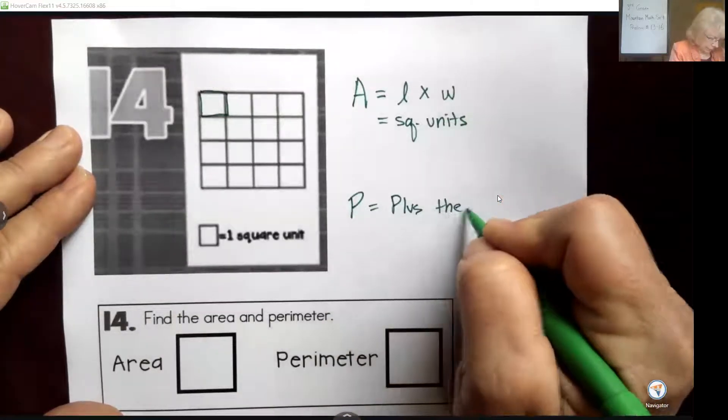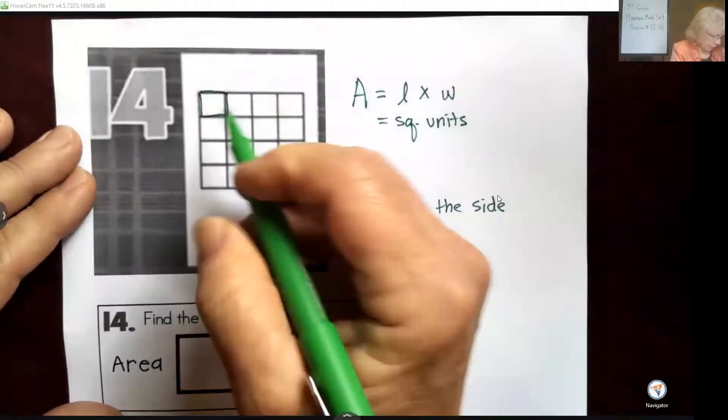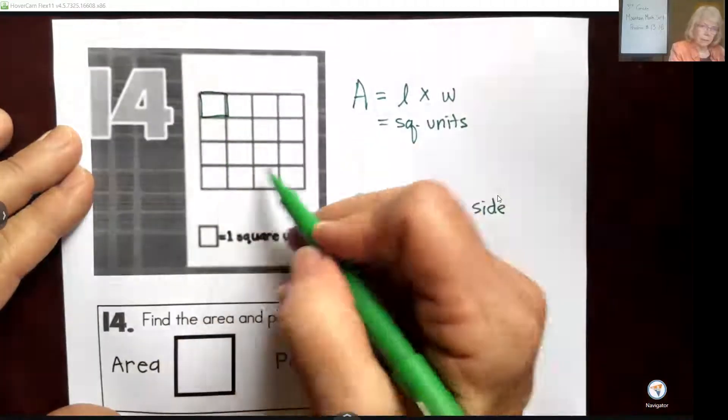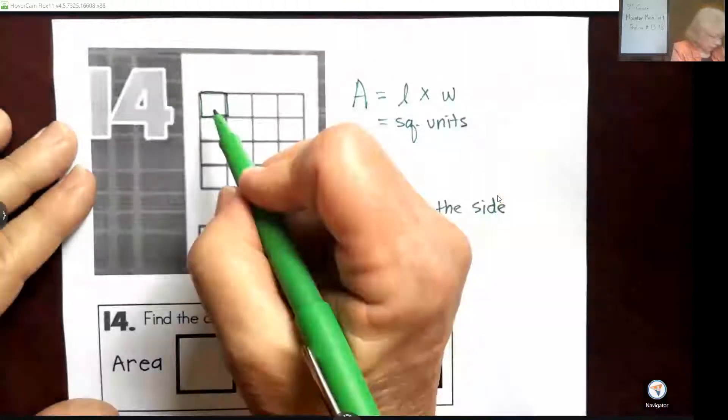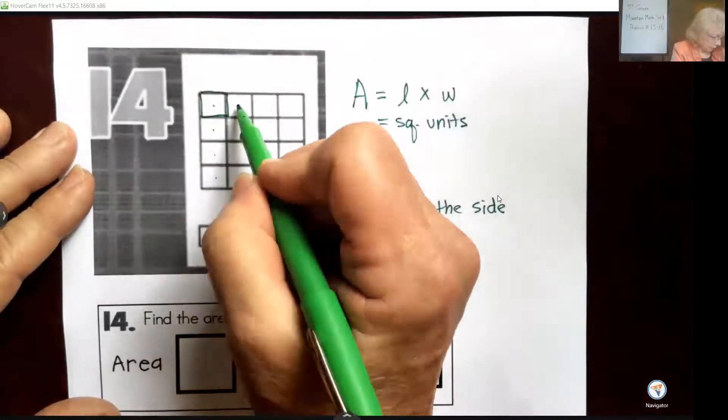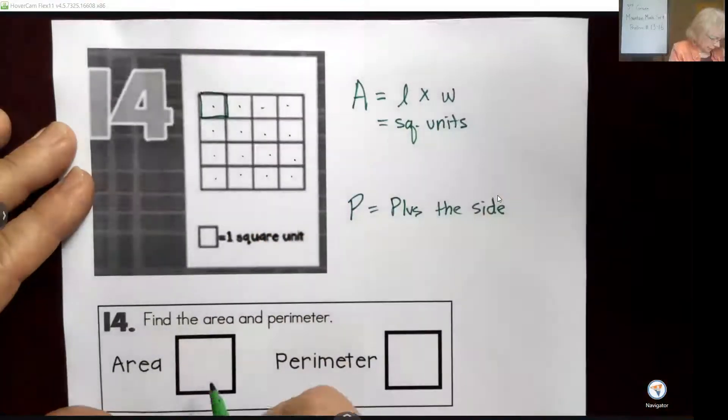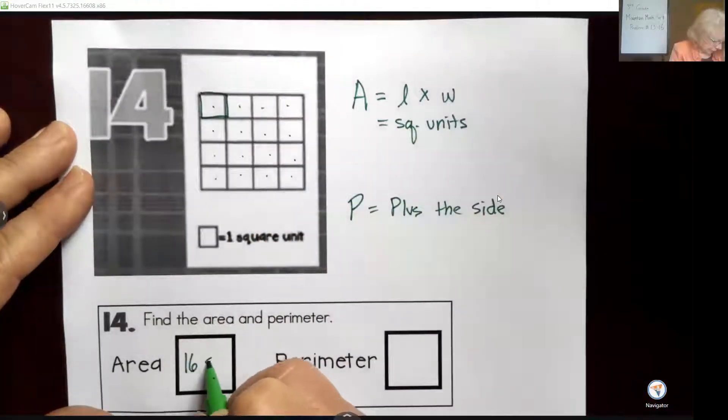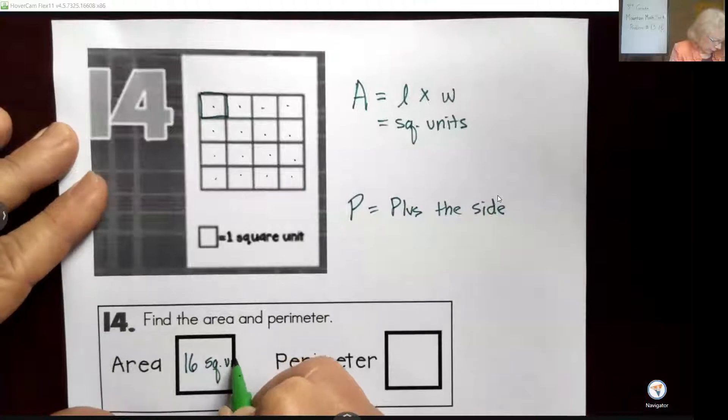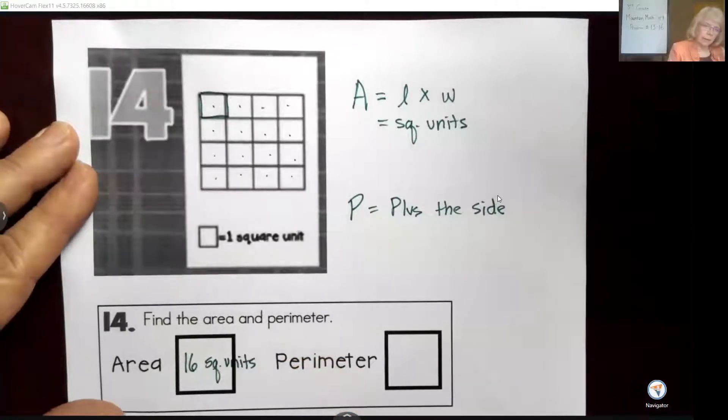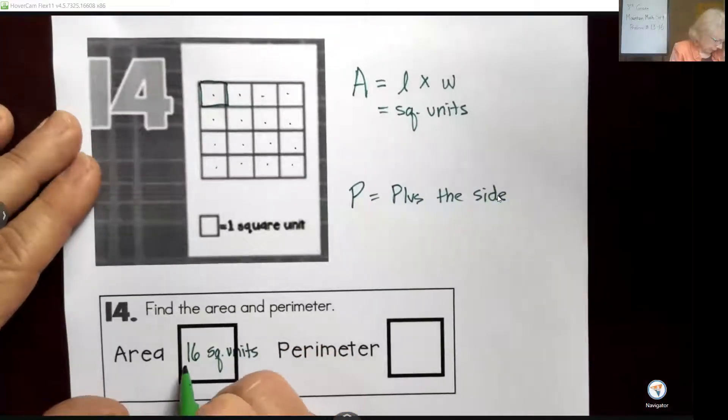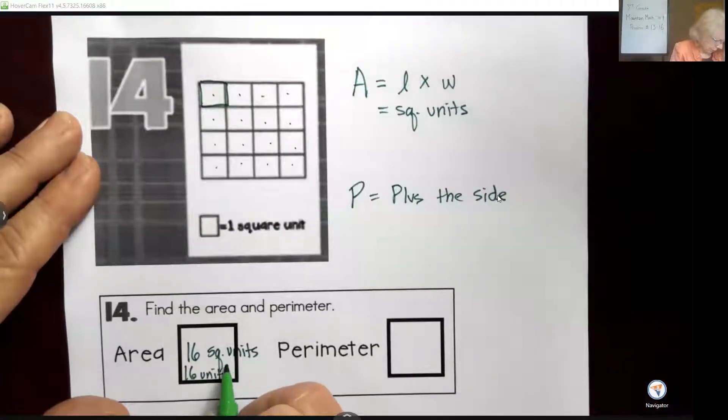Let's do area first. Area is all the space in the middle. Let's just go ahead and count them: 1, 2, 3, 4, 5, 6, 7, 8, 9, 10, 11, 12, 13, 14, 15, 16. So we have 16 square units. The other way I teach my students, you can write this as 16 units with a superscript 2. We say units because it doesn't tell us inches or feet or whatever.